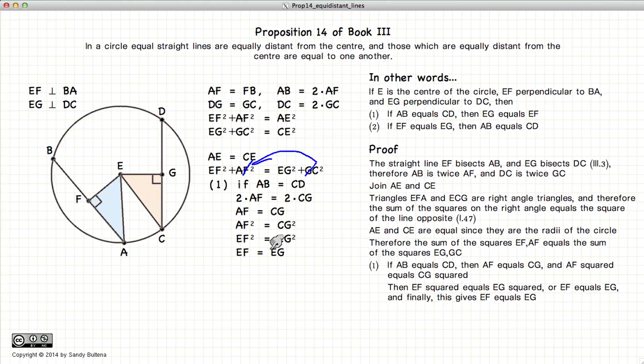So what we have shown here is that if BA is equal to DC, then EF squared is equal to EG squared, which is the first part of this proposition.